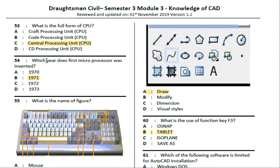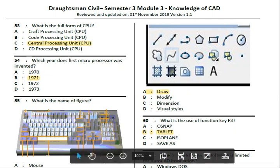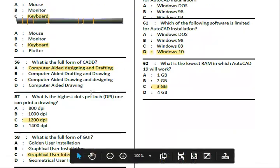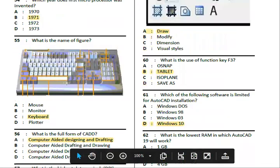Next, which year was the first microprocessor invented? In 1971, the first microprocessor was invented. Next, this is a diagram — name the device shown. The answer is the keyboard.